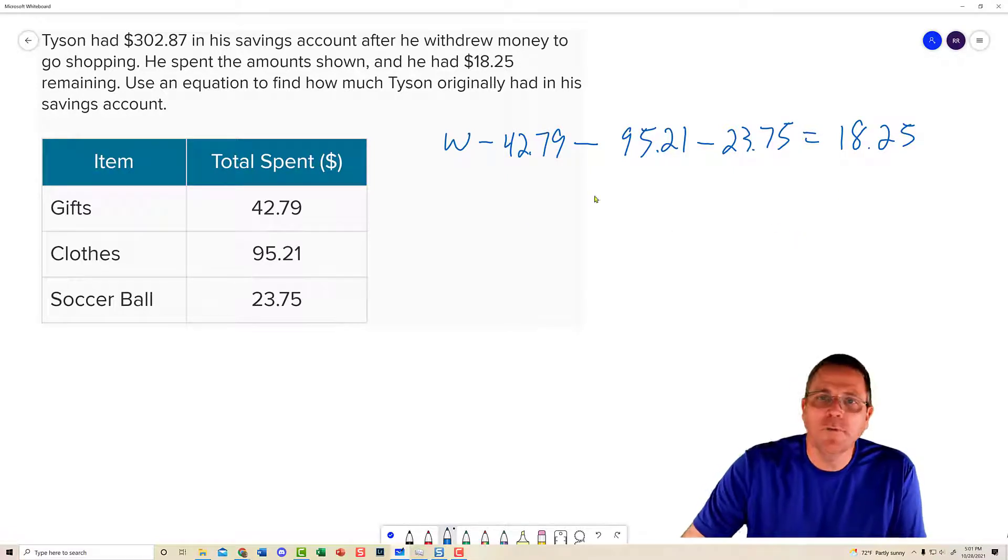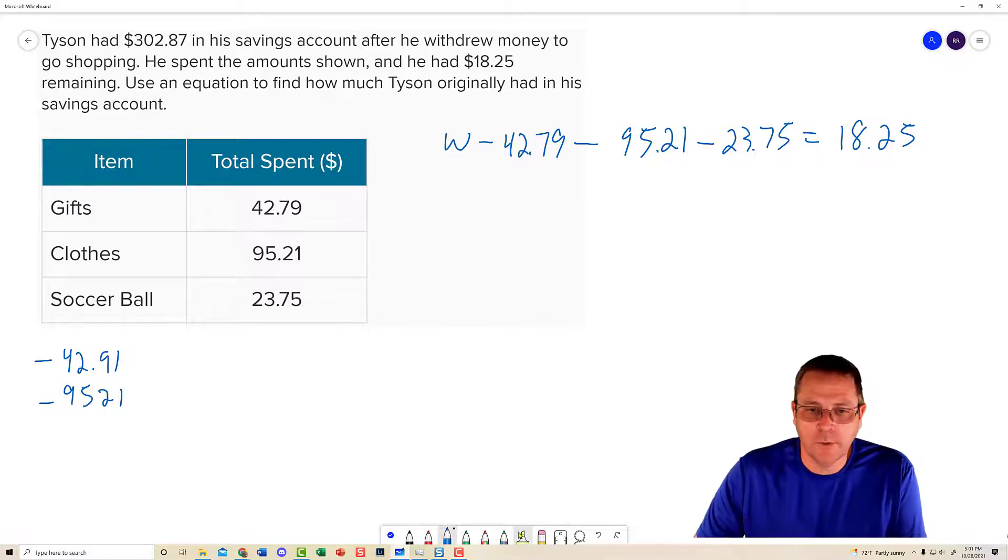So the first thing we're going to have to do is add up all those negatives. The signs are the same. We're going to find the sum. So I have a negative $42.91. A negative $95.21. Oh, that's $42.79. That would have gotten me in a heap of trouble there. So this one here is $42.79. $95.21.